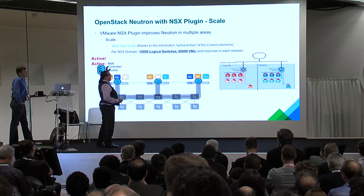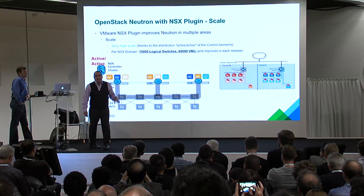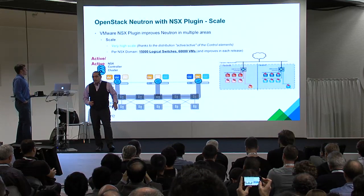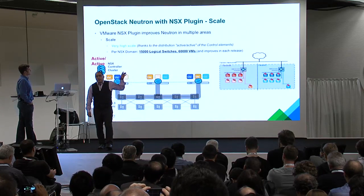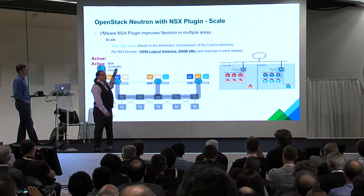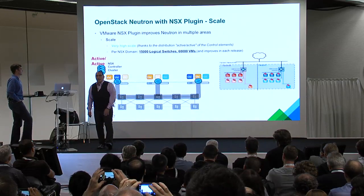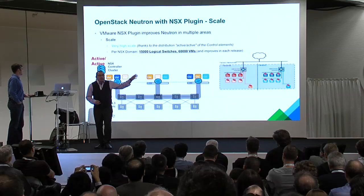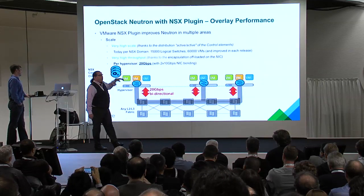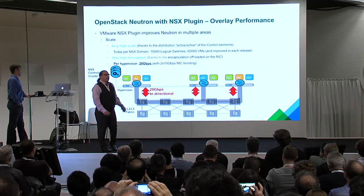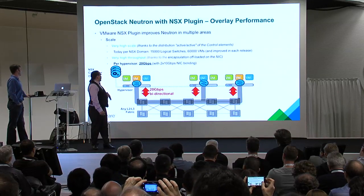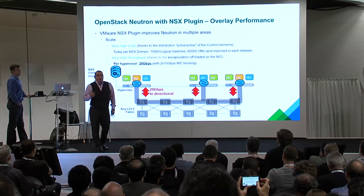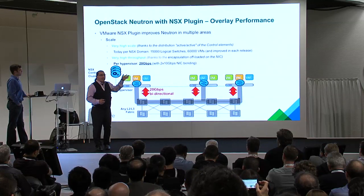Some of the improvements we offer in this environment: for scale, we have very high scale limits in each NSX domain — the control clusters support 15,000 logical routers, and 60,000 logical ports or VMs that can attach into those 15,000 networks. This is all fully active-active. For high throughput, you can bond two 10-gig NICs and get near wire speed — essentially 20 Gbps between those two bonded 10-gig NICs. If you need that wire-speed communication for data transfer in the tenant network, we can provide that type of scale.